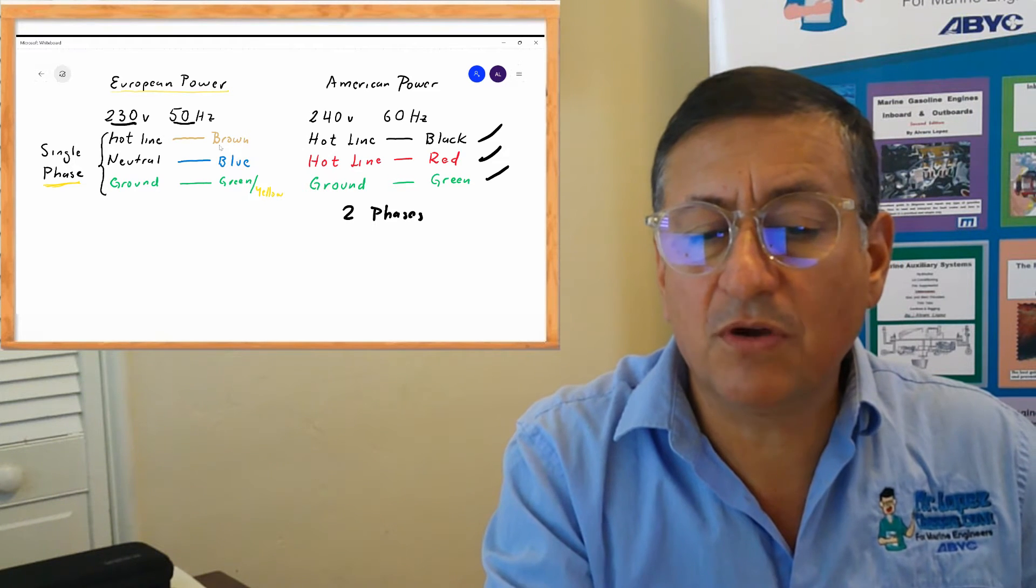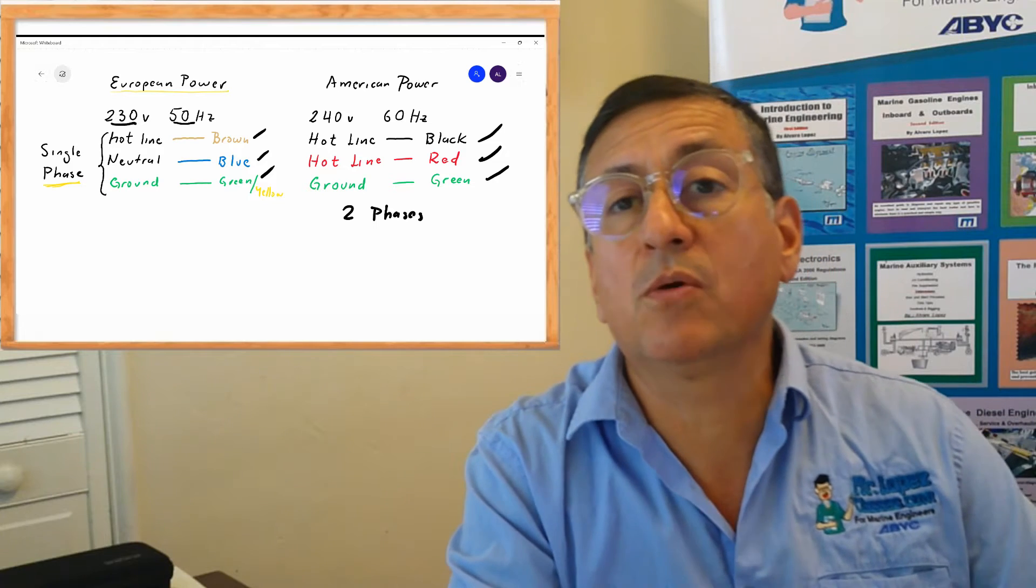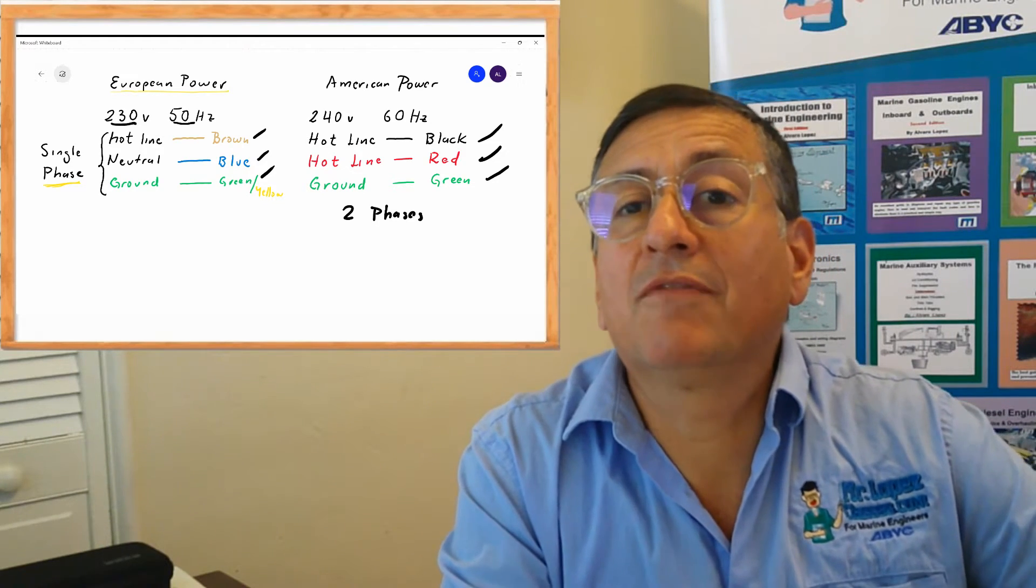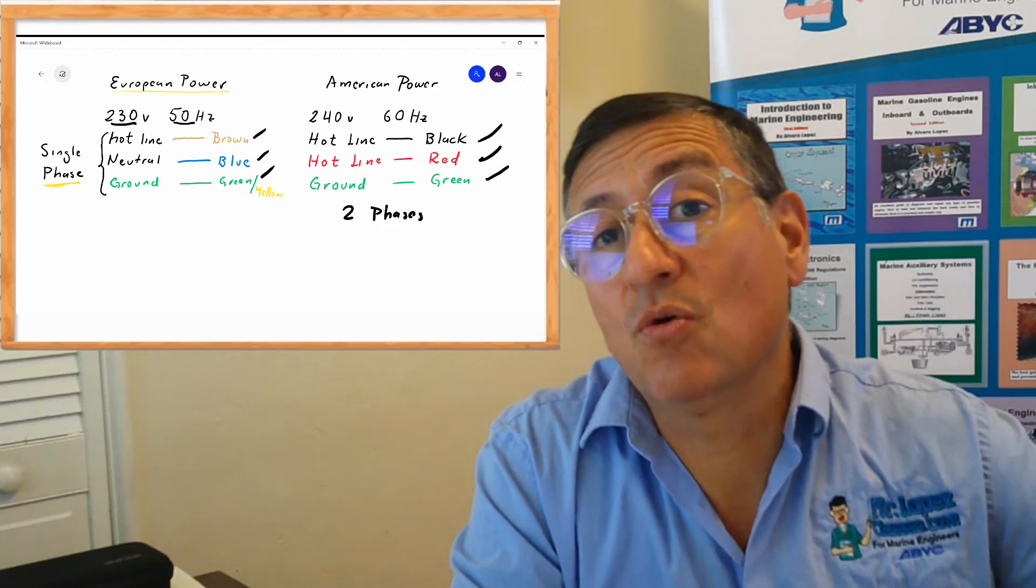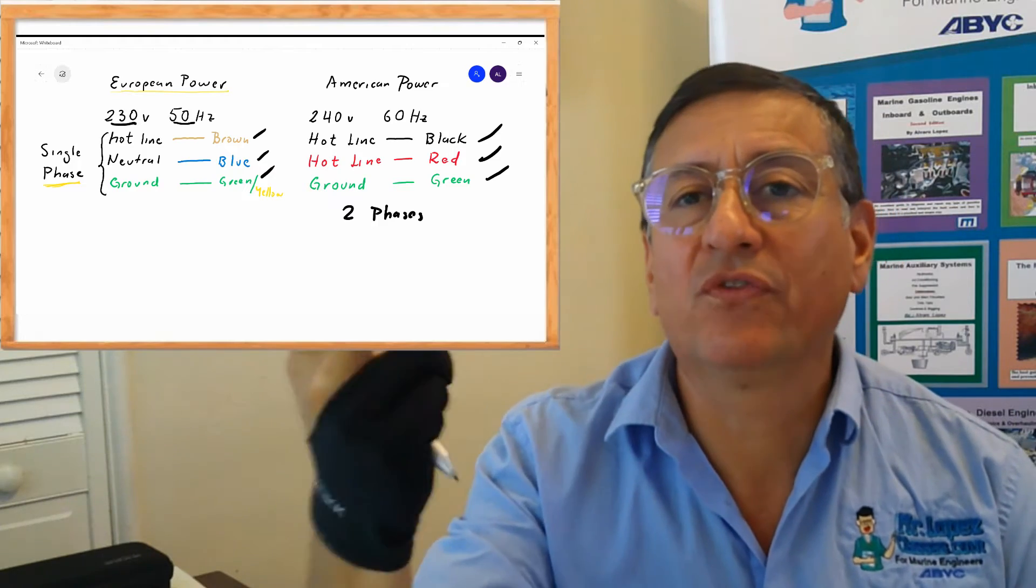In European power, single phase, you have brown for hot line, blue for neutral, and green with yellow strip for ground. That's different. You have 230, 50 hertz in one phase, and you have 240, 60 hertz in two phases.